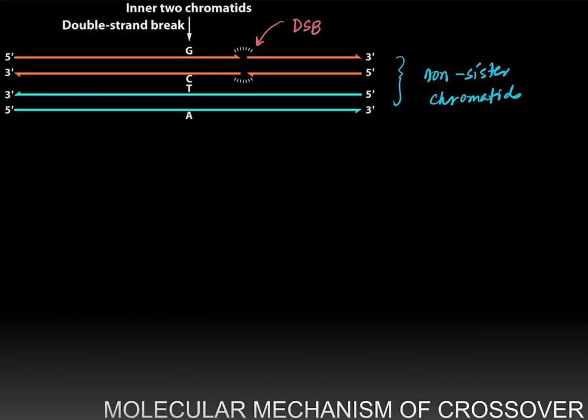And a double strand break is when the phosphodiester bond is broken, and in this case the phosphodiester bond has been broken in both the strands of the double helix of the orange DNA molecule.